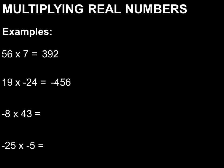Next, we have negative 8 times 43, which is equal to negative 344. Lastly, we have negative 25 times negative 5, which is equal to 125, since they have like signs.